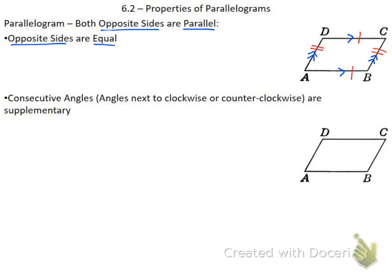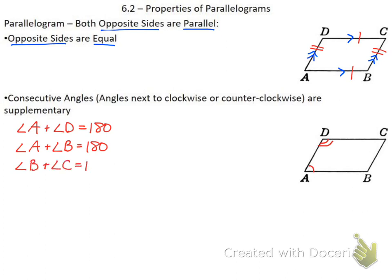Since we have parallel lines, we know that we have same-side interior angles, so consecutive angles are going to be supplementary — that's angles that are next to each other. So angle A and angle D are supplementary, meaning angle A plus angle D equals 180. Similarly, A and B equal 180, angle B and angle C equal 180, and angle C and angle D are also equal to 180, since they're consecutive angles.